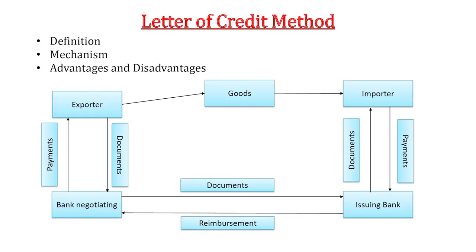The next method is letter of credit. When negotiating a deal, first try to get advance payment — maybe 10%, 20%, or 50%. But if the buyer is not giving advance payment, then the next best method for the exporter is letter of credit. This instrument is used by exporters worldwide, especially when dealing with new buyers where the quantum of order is comparatively high and there is a risk of non-payment.